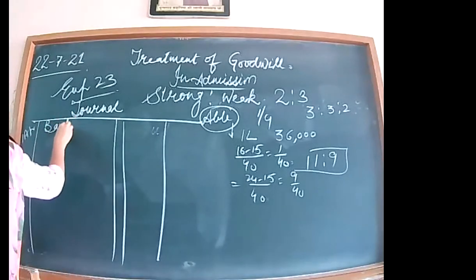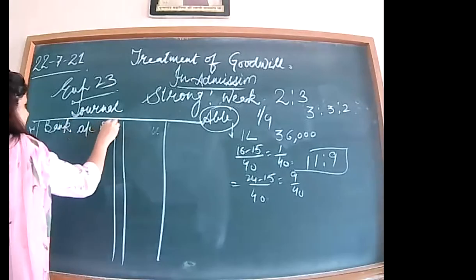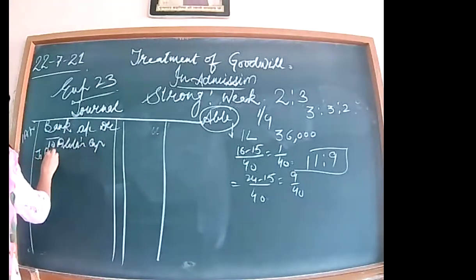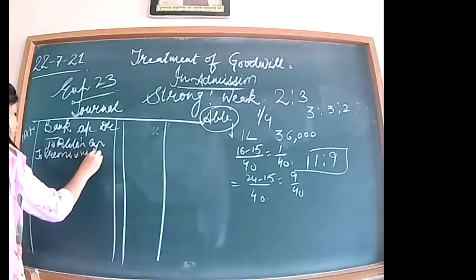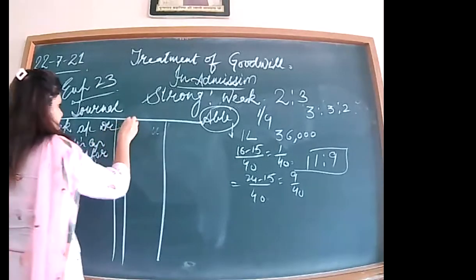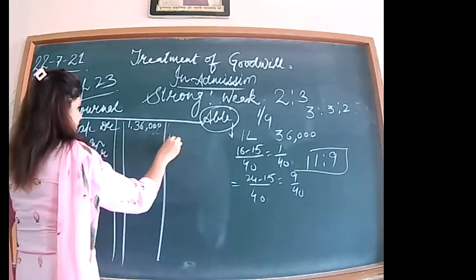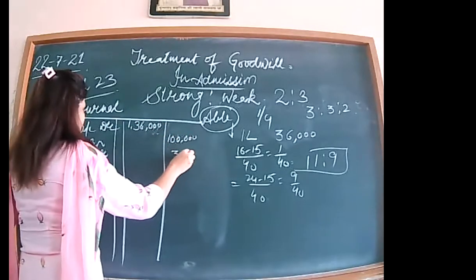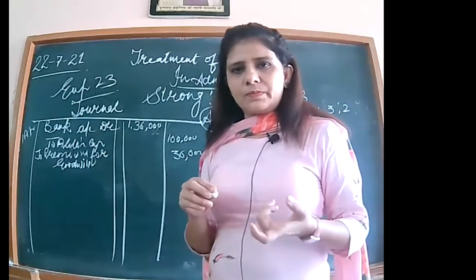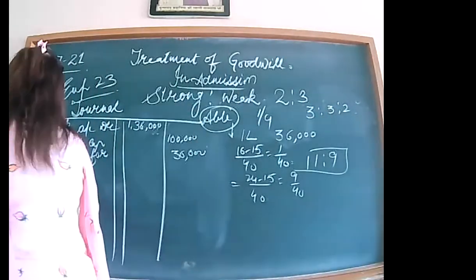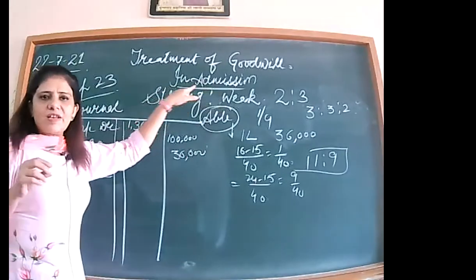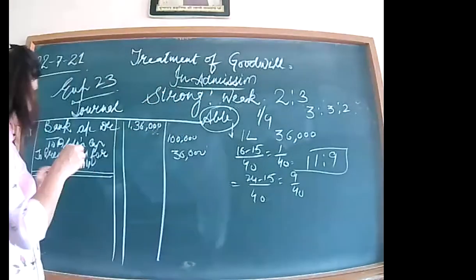The first entry: bank account debited to Abel's capital — one lakh — and to premium for goodwill — 36,000. Then draw the line to signify the end of the first entry. The second entry: premium for goodwill is to be divided between the sacrificing partners. In this case, both Strong and Weak are sacrificing, so premium for goodwill account is debited to Strong's capital and to Weak's capital.